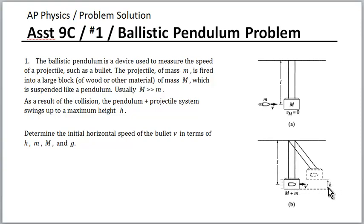Or if we know how high the combination swings, we can figure out the speed of the bullet. And that's the problem we're asked to do here, to solve for the speed of the bullet before it hits the block as a function of this height and other variables.